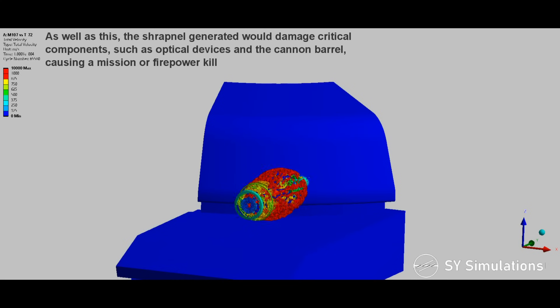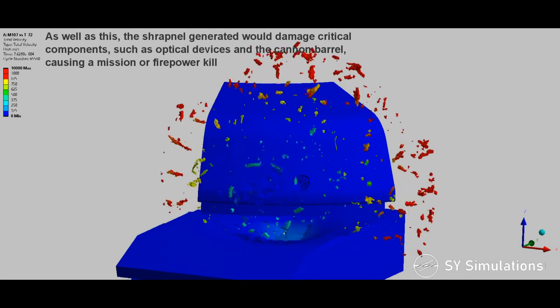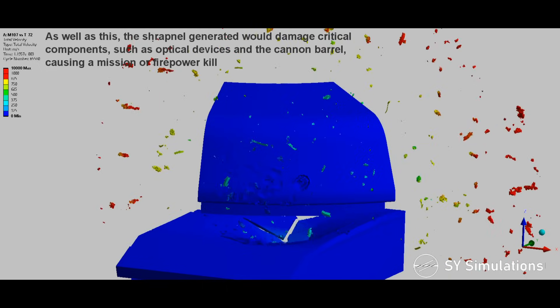As well as this, the shrapnel generated would damage critical components, such as optical devices and the cannon barrel, causing a mission or firepower kill.